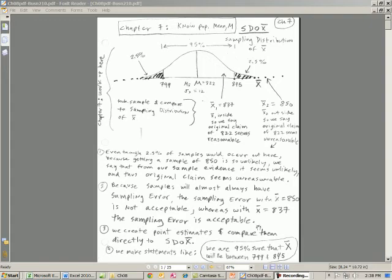However, if we got a value out here or down here, for example, if we got an x-bar equal to $850, then the sampling error, the distance between these two, is so big we then say maybe this original claim is not reasonable. Very clear, the statements we made in chapter 7 are we believe that 95% of the x-bars will lie between these two values.